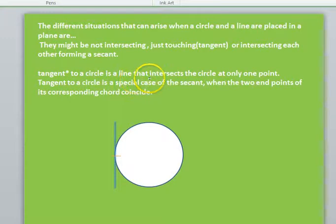Tangent to a circle is a line that intersects the circle only at one point. If it is clearly visible to you over here, the line is intersecting the circle only at one point.